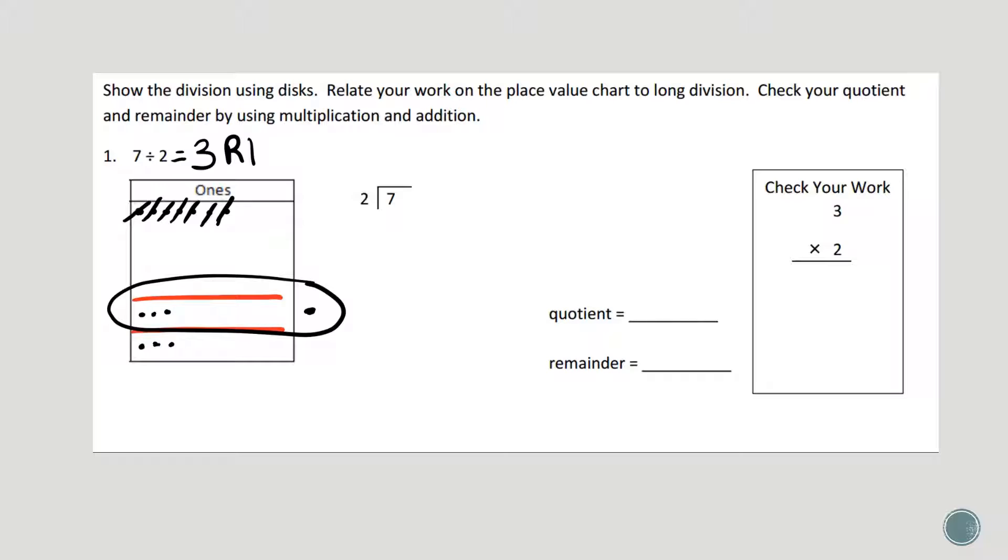And now we can also do that using standard algorithm. 2 goes into 7 three times. 3 times 2 is 6 and we can subtract and get 1. There are no other digits to bring down, so the 1 becomes my remainder. My quotient is the answer to division. So my whole number quotient is 3 and my remainder is 1.